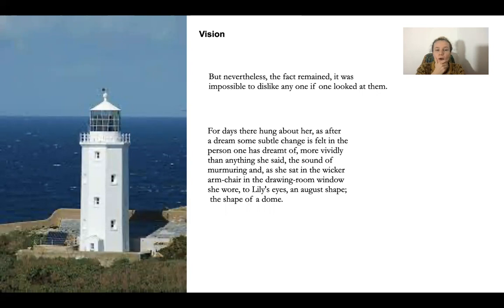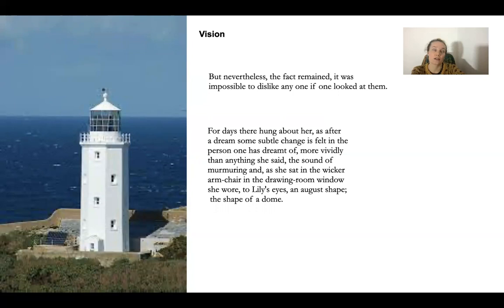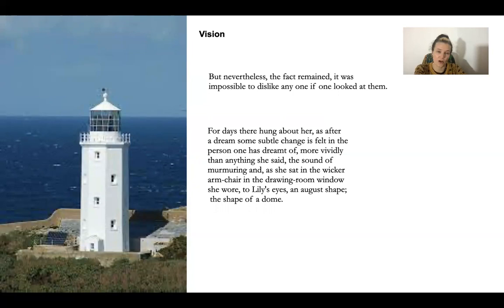So let's start then with the vision. Vision is given a huge amount of time and space in this novel. Here you can see this image — I will show you several images of the Godrevy lighthouse in St Ives in Cornwall in the UK, which is the lighthouse Woolf based this on. The novel is meant to be set on the Isle of Skye in Scotland, but she actually went with her family in the summer times when she was young to St Ives in Cornwall, and this is the lighthouse she's writing about.